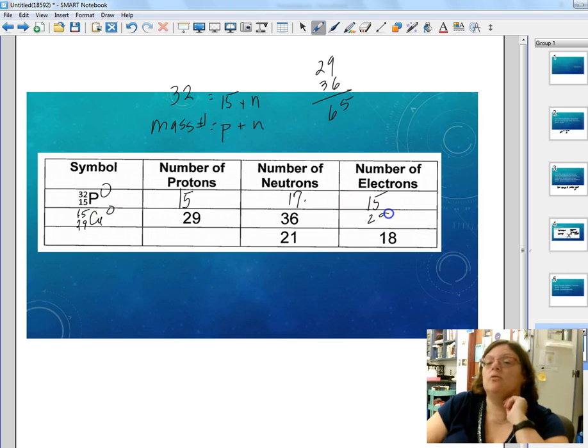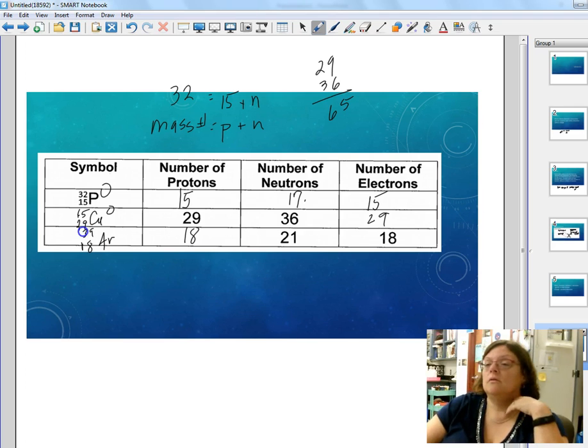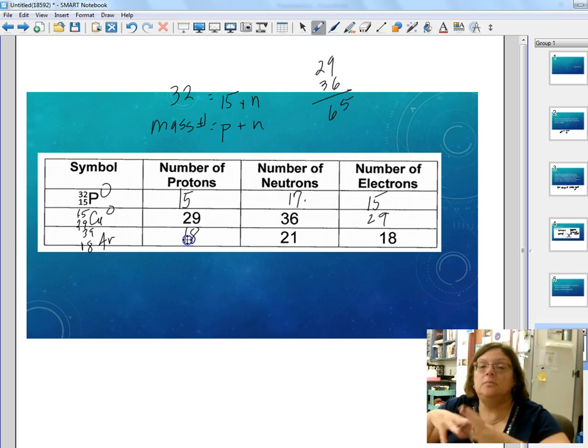For our third one, again if we assume that there is no charge, 18 electrons and 18 protons would be what we're talking about, and 18 is argon. For a mass number, 18 plus 21 we would have 39. That gives you a little bit of practice using the nuclide symbols or the isotope notation.